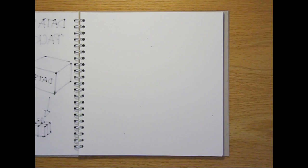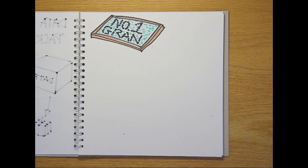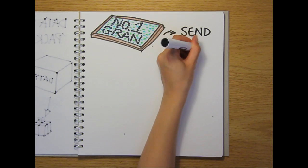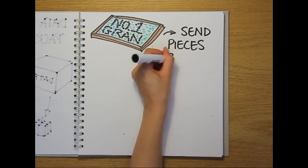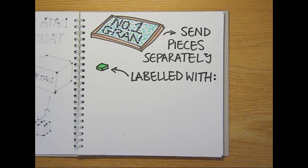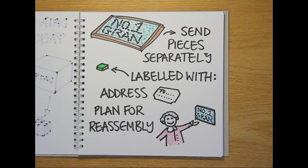A helpful way to think about this is to imagine that you're trying to send a huge mosaic in the post to your grandma. Fully constructed, it's too large and too fragile to be posted. So instead, you dismantle it and send each tile individually, along with two bits of critical information: the address where your gran lives, and the plan for the mosaic so she knows where each piece goes when she puts it back together.